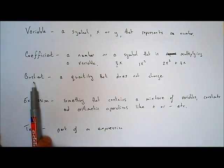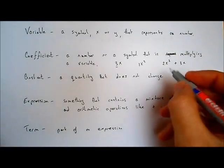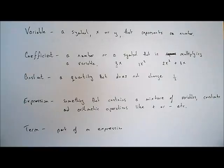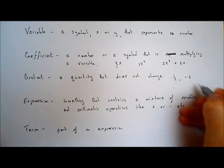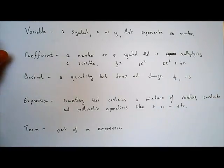A constant is just a quantity that does not change — it's a number. Something like 1/2 is a constant. 1/2 is always 1/2; it's never going to change — it's always a half. Minus 3 is a constant; it never changes. It's always minus 3.